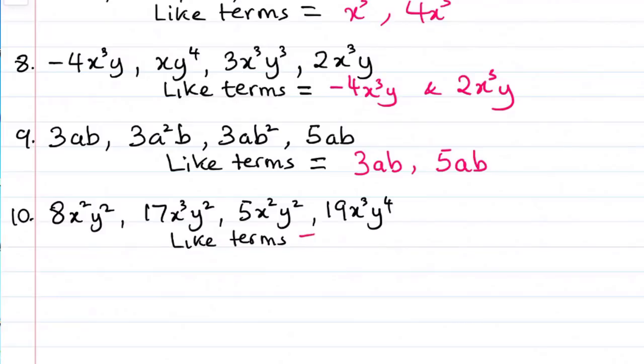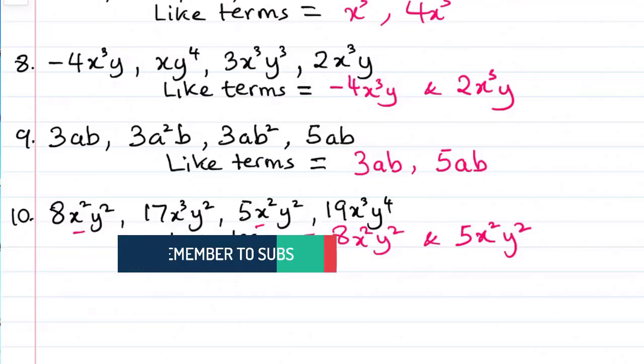And in the last one, we have 8x squared y squared, 17x cubed y squared, 5x squared y cubed, 19x squared y raised to the power of 4. So we can see 2 that are closely related in 8x squared y squared, and 5x squared y squared. So you can see how we picked out similar variables and separate them from the dissimilar one.